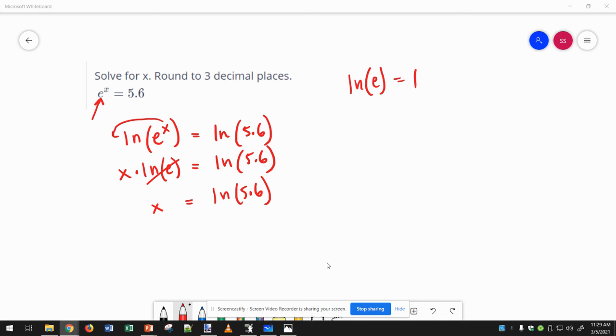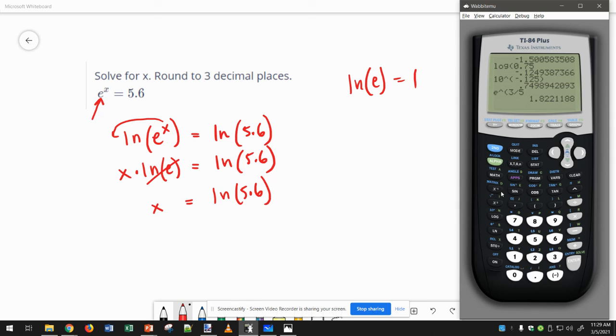So now I go to my calculator. Natural log, which is right here, ln of 5.6. And notice I write it with lowercase ln. It looks maybe like a 1, but it's not a 1.